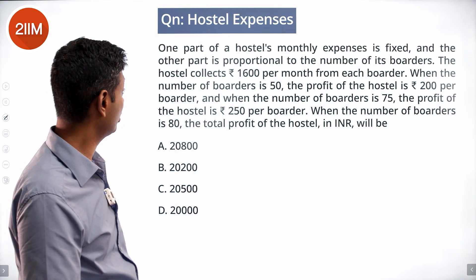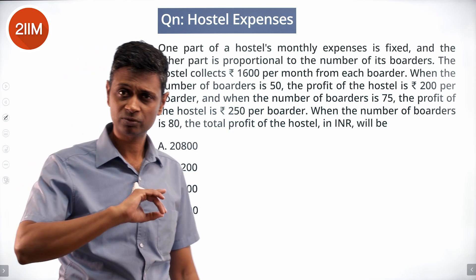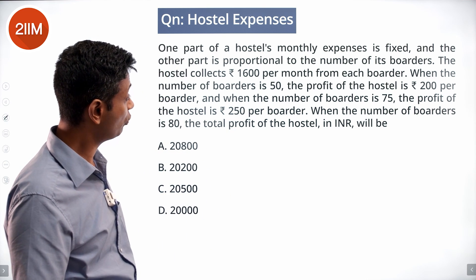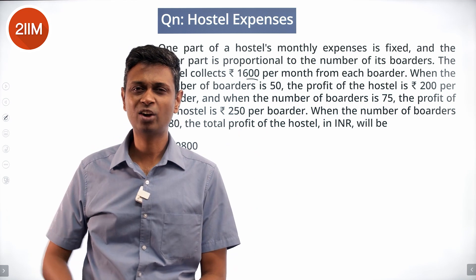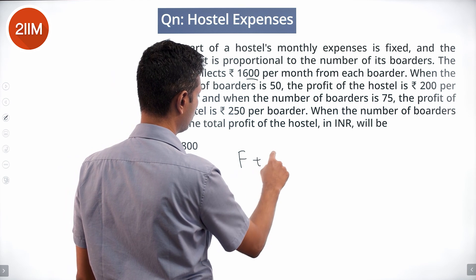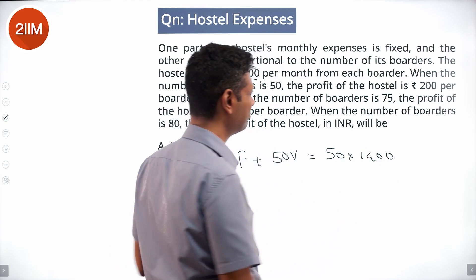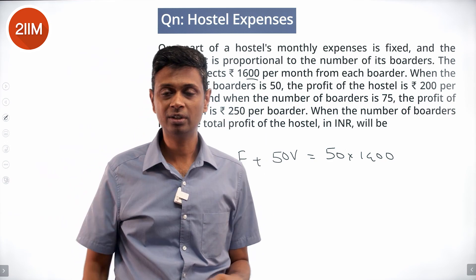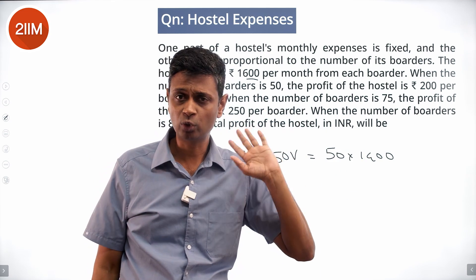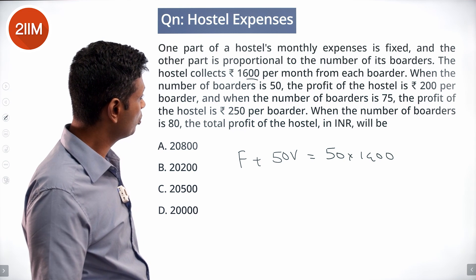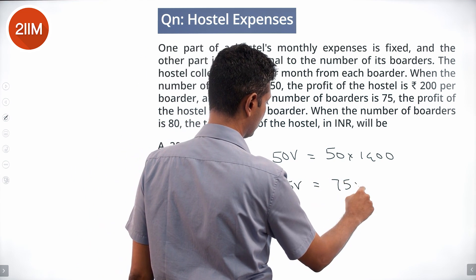One part of a hostel's monthly expense is fixed and the other is proportional to the number of boarders. When there are 50 boarders, the profit is 200 per boarder (so cost = 1400 per boarder): F + 50V = 70,000. When there are 75 boarders, profit is 250 per boarder (cost = 1350 per boarder): F + 75V = 101,250.